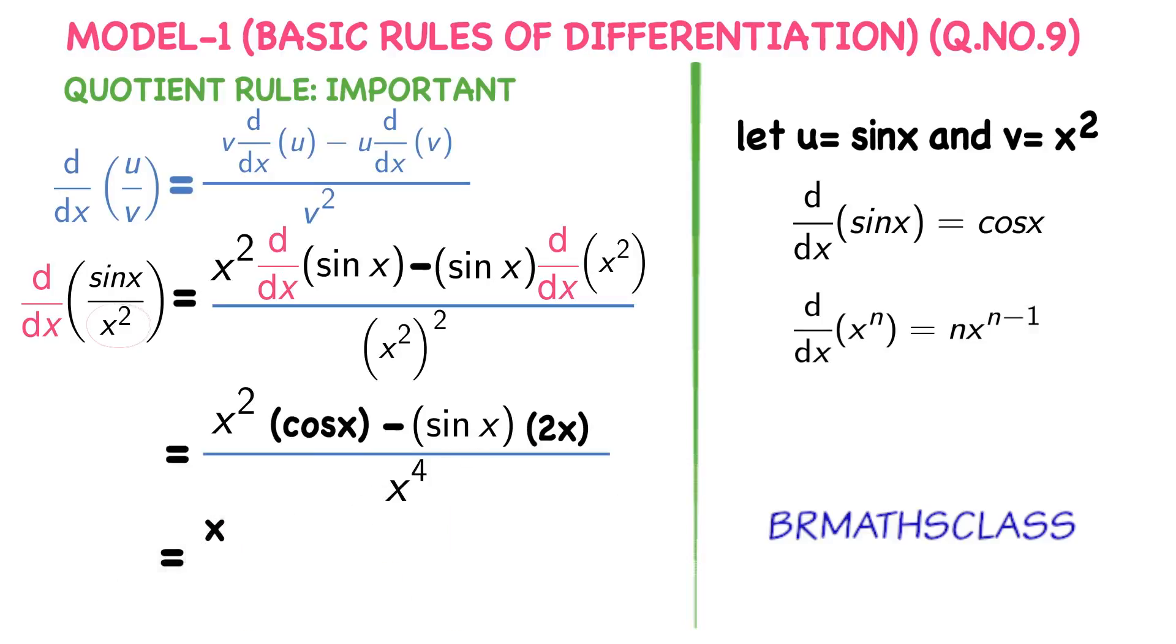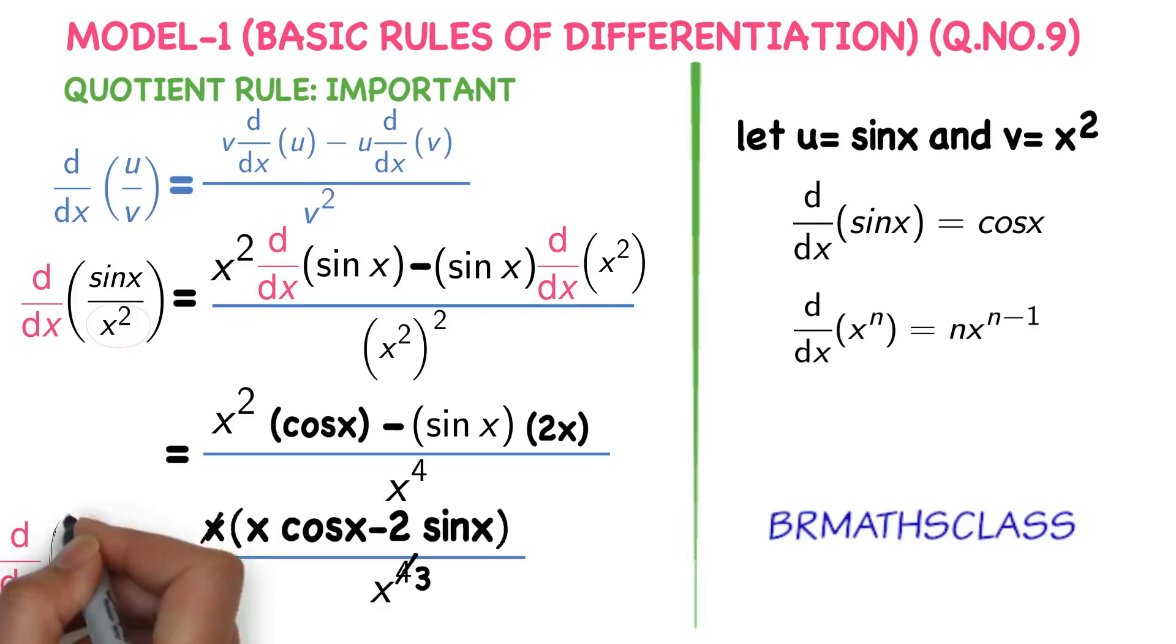Now in the numerator you take x common. What you will get: x into cos x minus 2 sin x whole divided by x power 4. You observe numerator x and denominator x will get cancelled, x cube is remaining. So derivative of sin x divided by x square is x cos x minus 2 sin x whole divided by x cube.